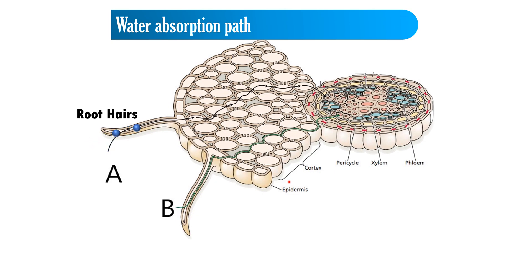This is a schematic representation of how water will enter, and this mechanism involves two processes basically. A represents apoplastic movement and B represents symplastic movement. Symplastic movement refers to the movement of water through the living contents of the root, whereas apoplastic movement refers to the movement of water from the soil to the xylem.